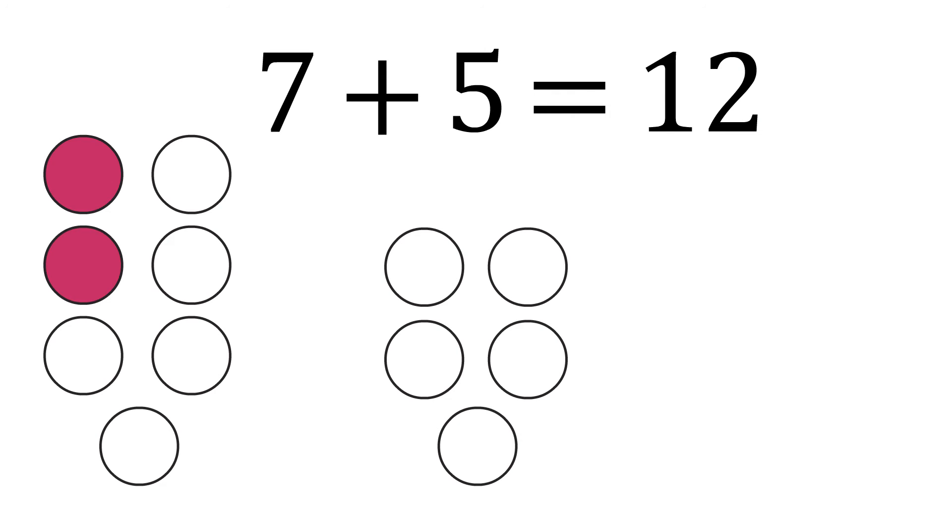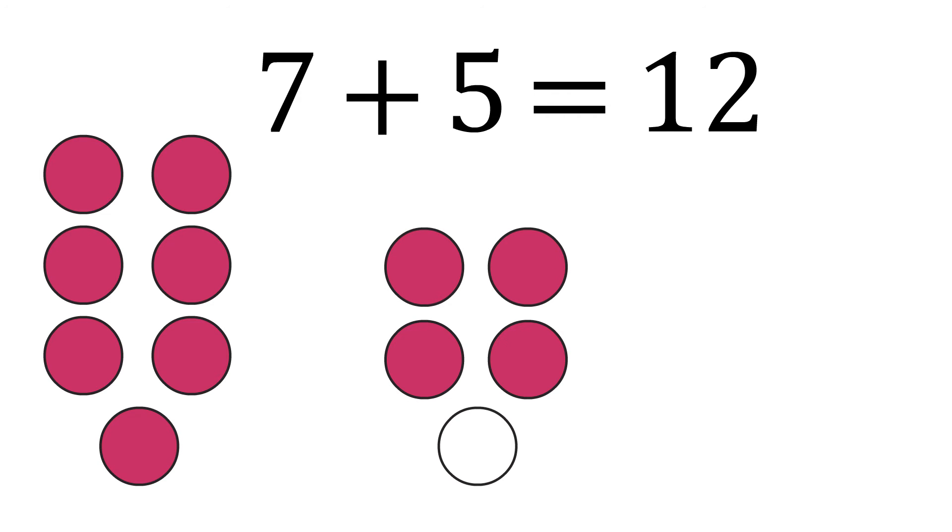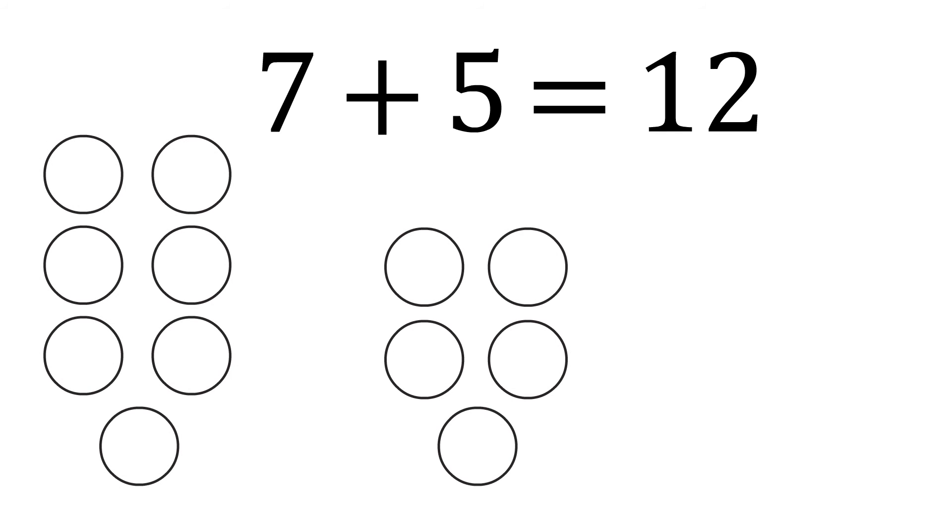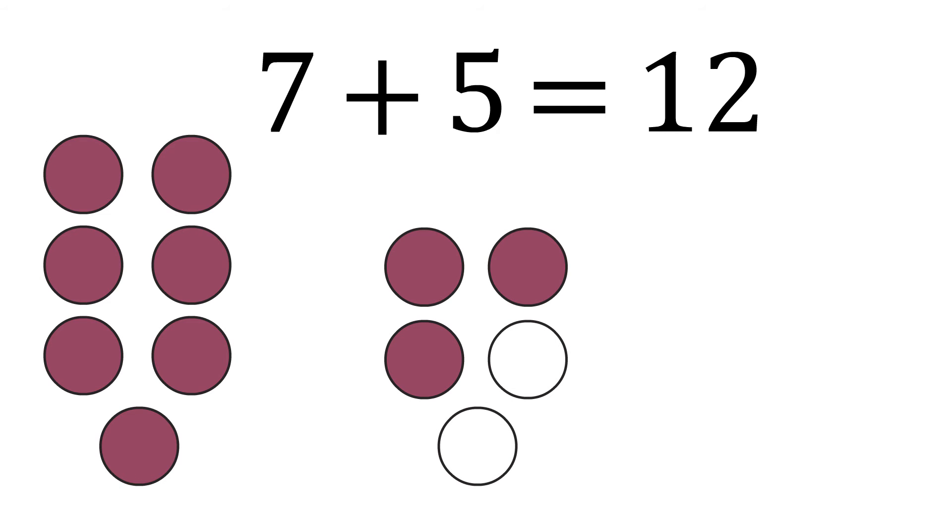One, two, three, four, five, six, seven, eight, nine, ten, eleven, twelve. Here is another way to add seven plus five. Seven plus three equals ten. Add ten plus two more equals twelve.